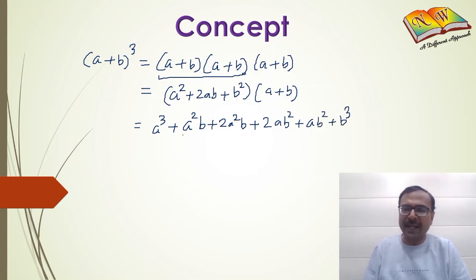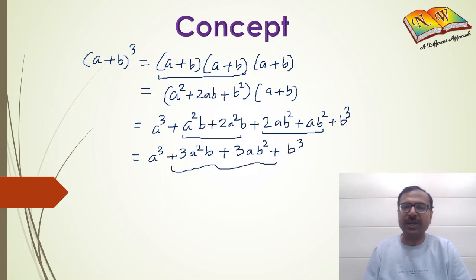If you combine the like terms, you can see a pair of like terms here and a pair of like terms here. You get a³ + 3a²b + 3ab² + b³, which is the algebraic identity we are trying to prove through activity. This is the algebraic proof, but we can do it through an amazing activity.